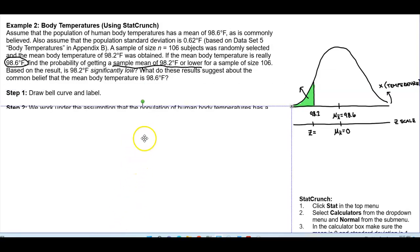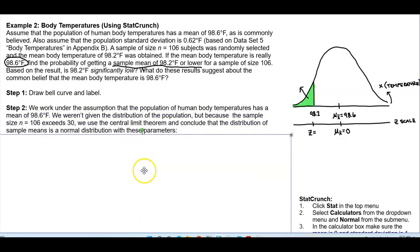So we've drawn the bell curve and we've labeled what we need to label. And so in step two, we work under the assumption that the population of the human body temperatures has a mean of 98.6 degrees Fahrenheit. We weren't given the distribution of the population, but because the sample size n is equal to 106 exceeds 30, we use the central limit theorem and conclude that the distribution of sample means is a normal distribution with these parameters.